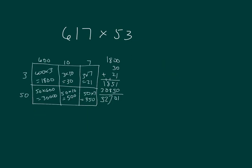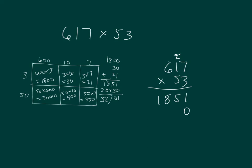Let's move over to show the standard algorithm. We start with the 3, multiplying 3 times 617: 3 times 7 is 21, write 1 with a regroup of 2; 3 times 1 is 3, plus 2 is 5; 3 times 6 is 18. That's the same number we had before. Now place a 0, then 5 times 7 is 35, write 5 with a regroup of 3; 5 times 1 is 5, plus 3 is 8; and 5 times 6 is 30. Adding those two partial products gives the same answer: 32,701.